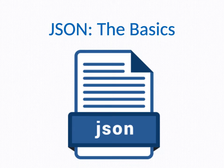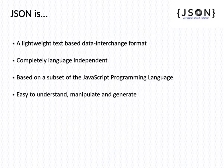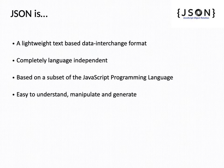Today we will be discussing JSON. JSON stands for JavaScript Object Notation. The basics of JSON: it is a lightweight text-based data interchange format. It is a completely language-independent concept, based on a subset of the JavaScript programming language. It is very easy to understand, manipulate, and generate JSON objects.